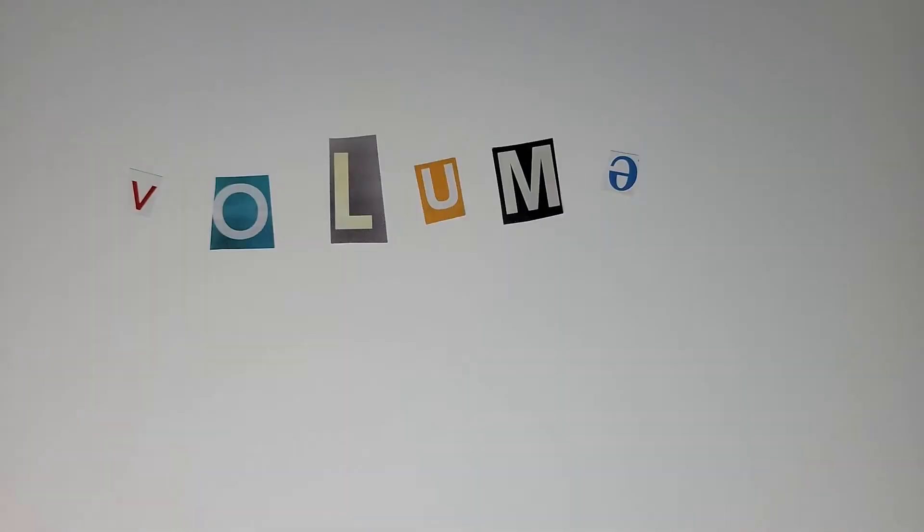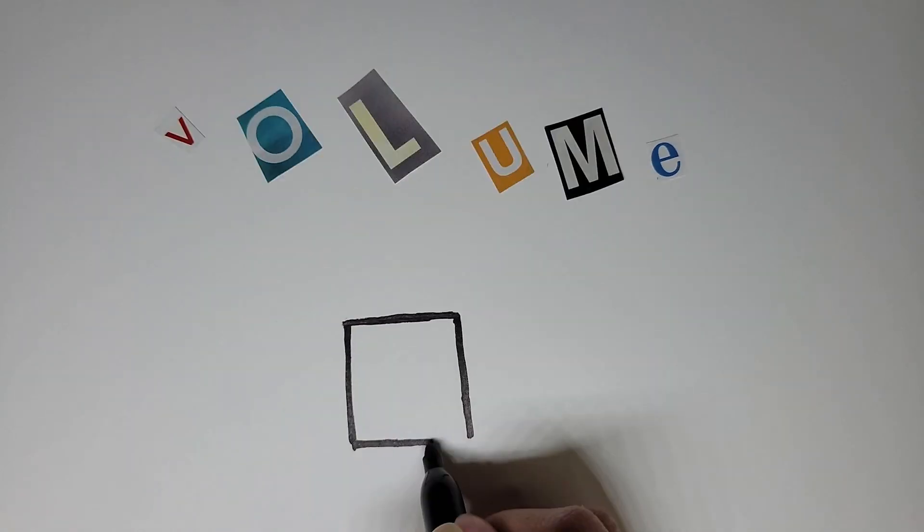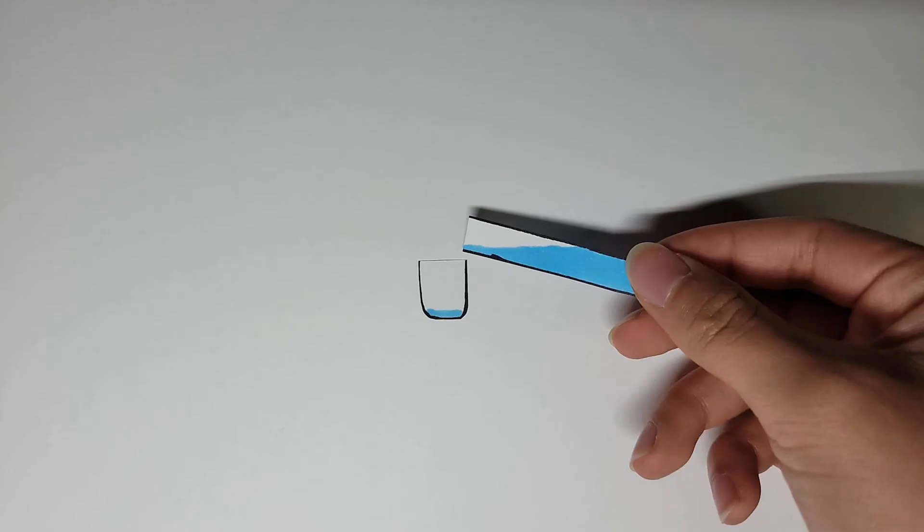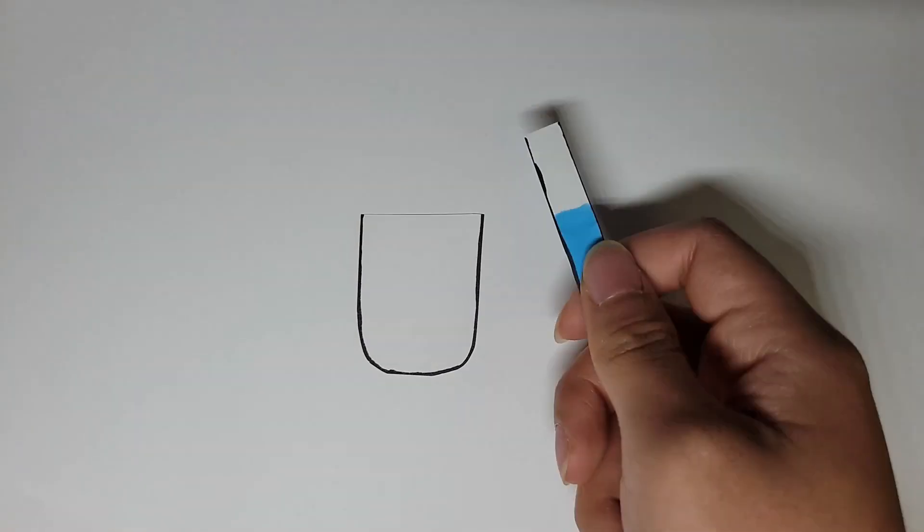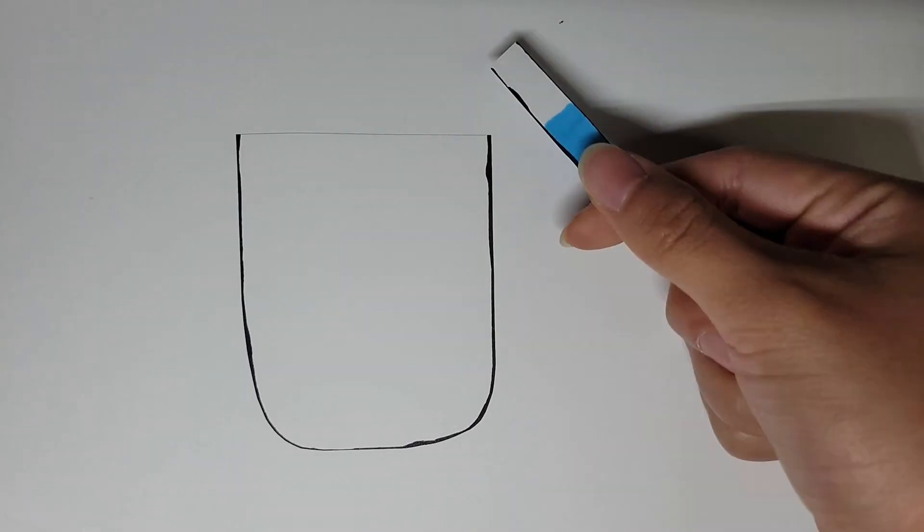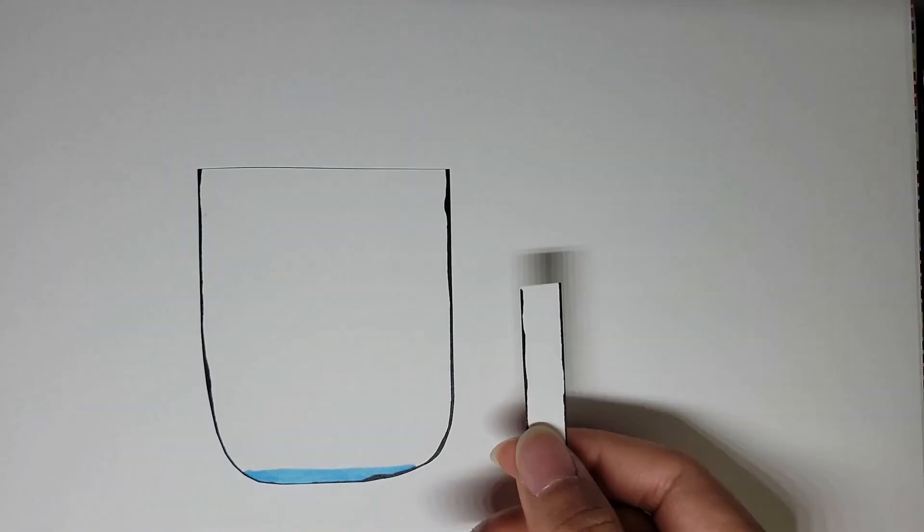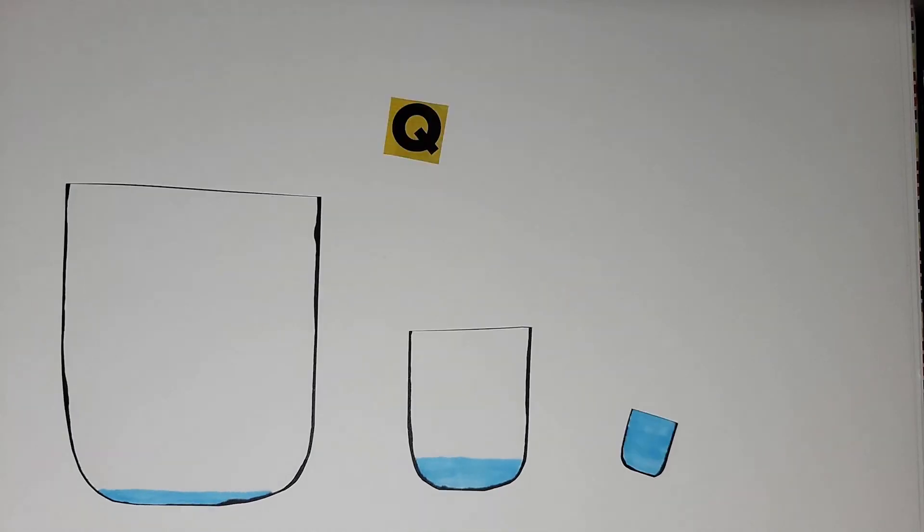Let's see another example. Volume is defined by how much space an object or substance occupies. Let's say that the same volume in this vial is poured into different sized containers, which all represent different ages. The volume of water that each container has is the exact same amount. It just seems smaller as the container gets bigger. And this is why, when you feel older, the weeks feel shorter.